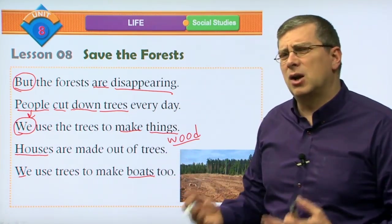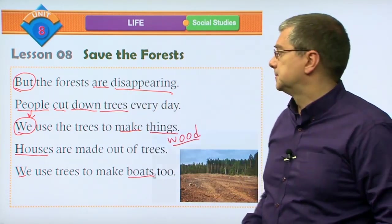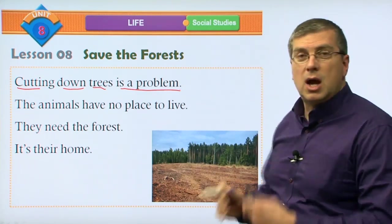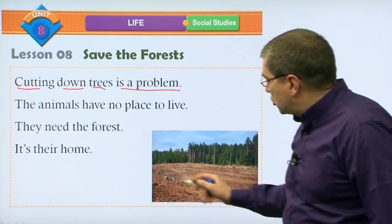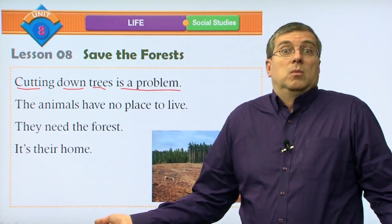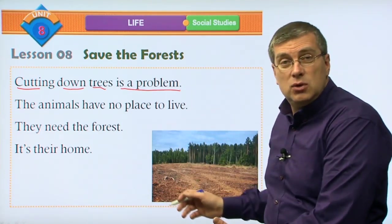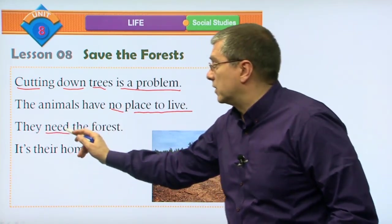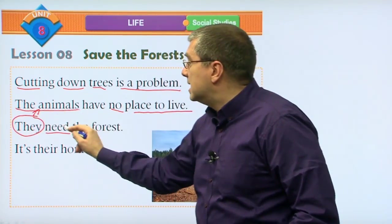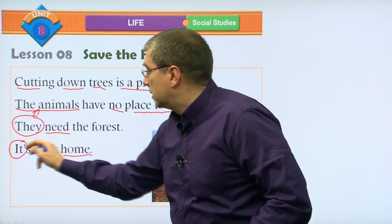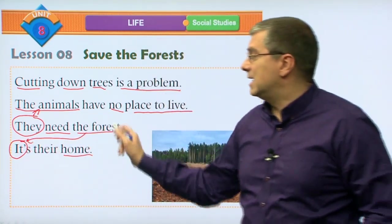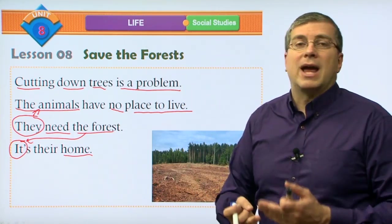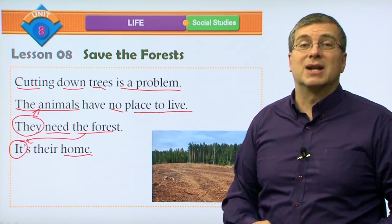We need trees, but we have to be careful to make sure not all the forests will disappear. Cutting down trees is a problem - we have to be careful that not all the forests go away. When we cut all the trees in an area, where do the animals go? Their home is gone. They have nowhere to find food, nowhere to find shelter. The animals have no place to live. They need the forest - it is their home. When the forest is disappearing, the animals don't have a home.